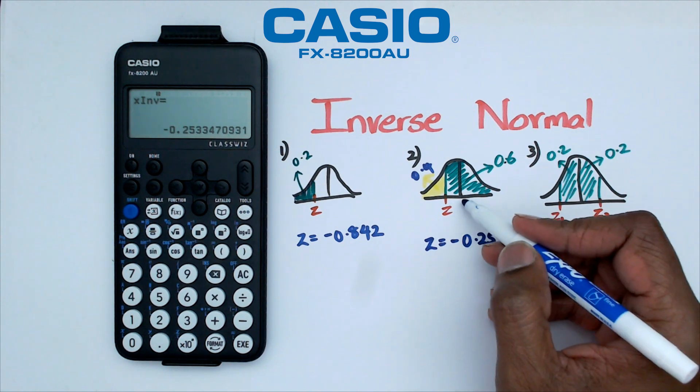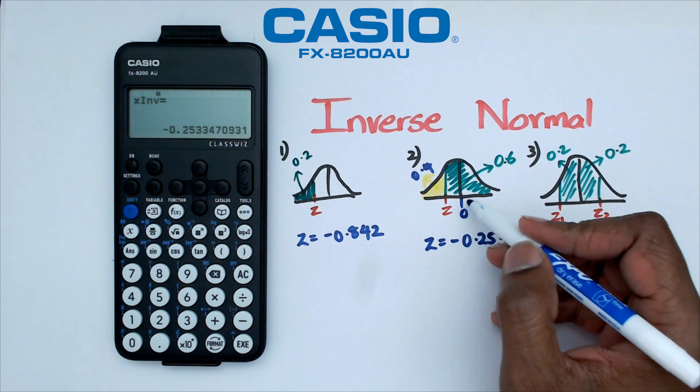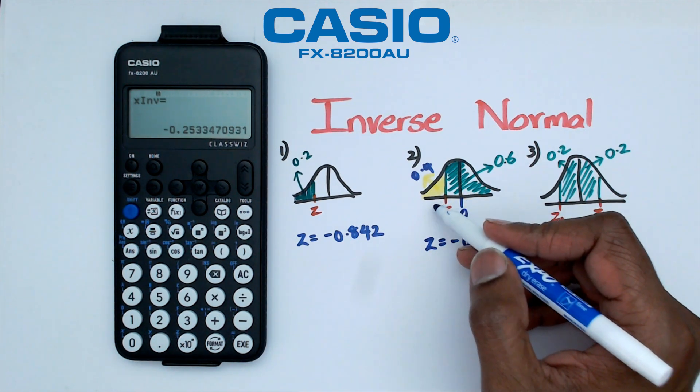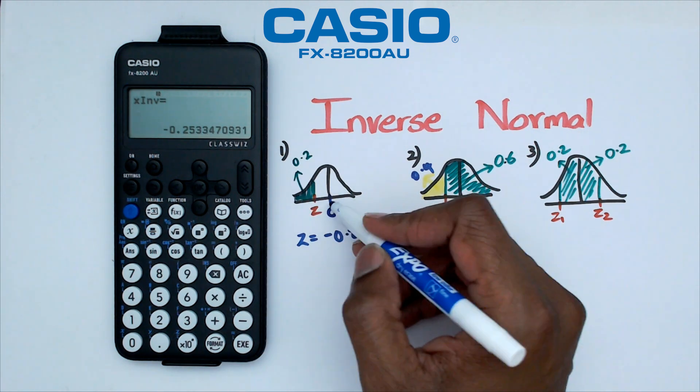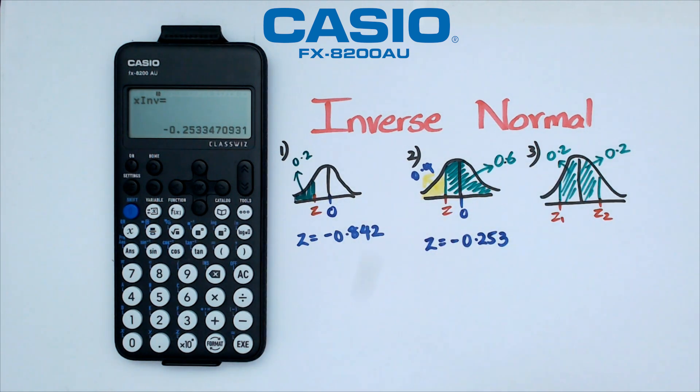Now we know we're correct because we know that 0 is here and anything before 0 is going to be a negative value. Likewise in number one, 0 was in the middle so we know that the Z value is going to be negative.